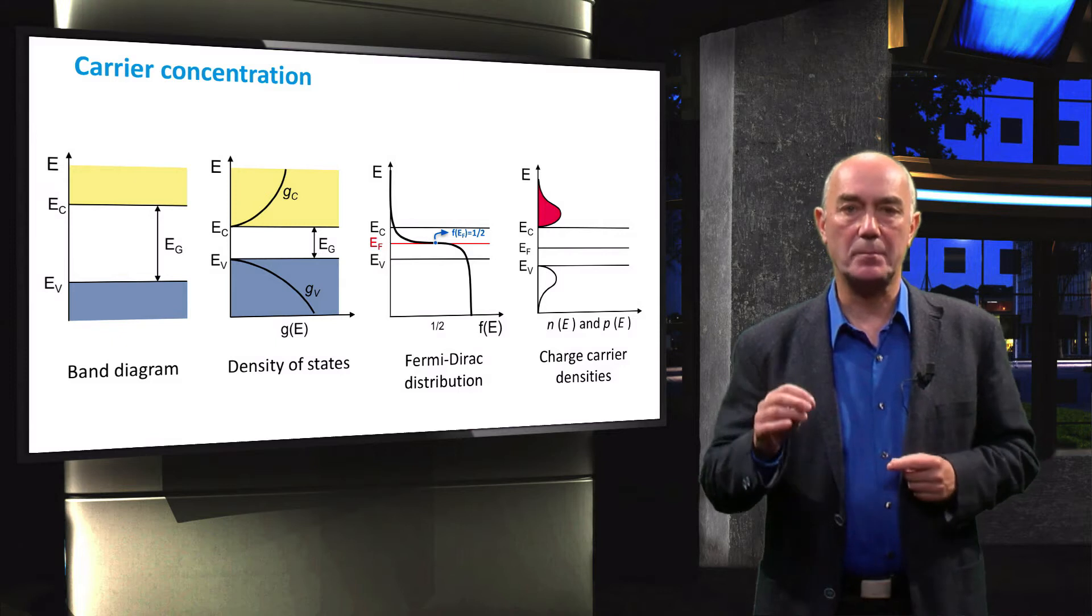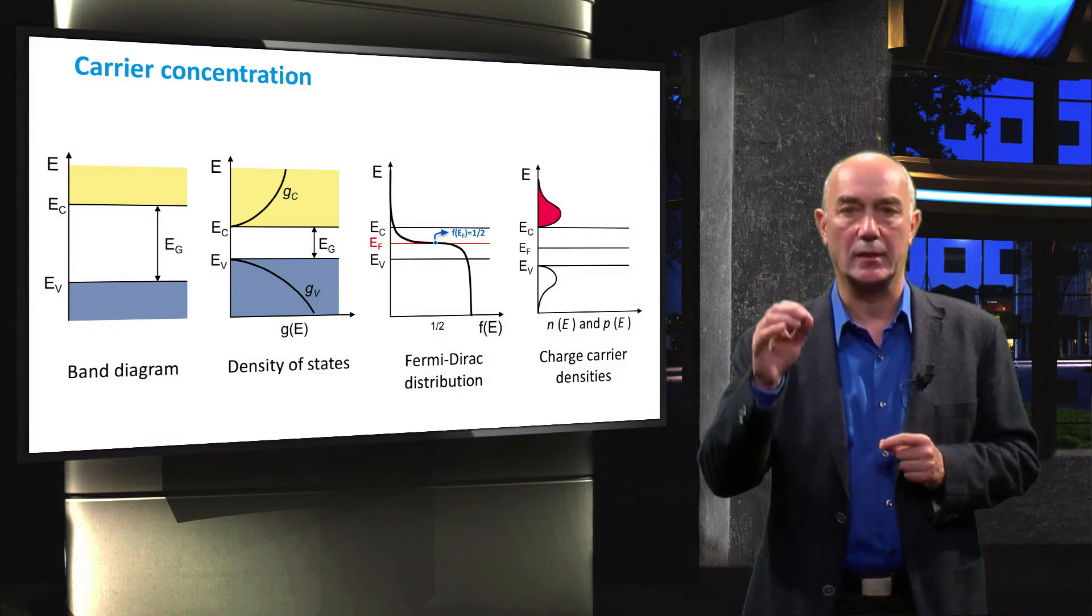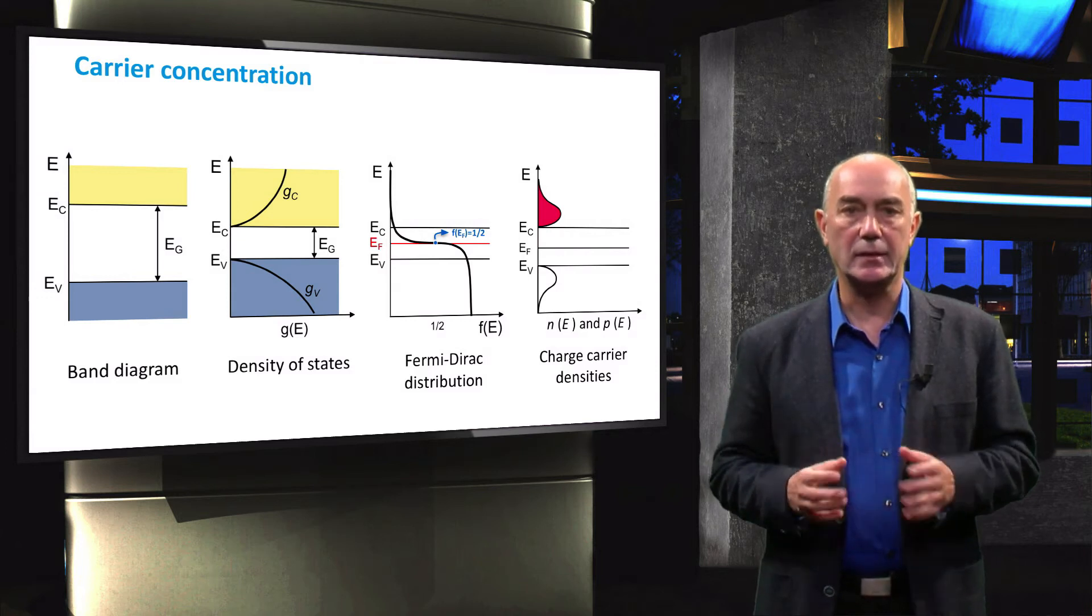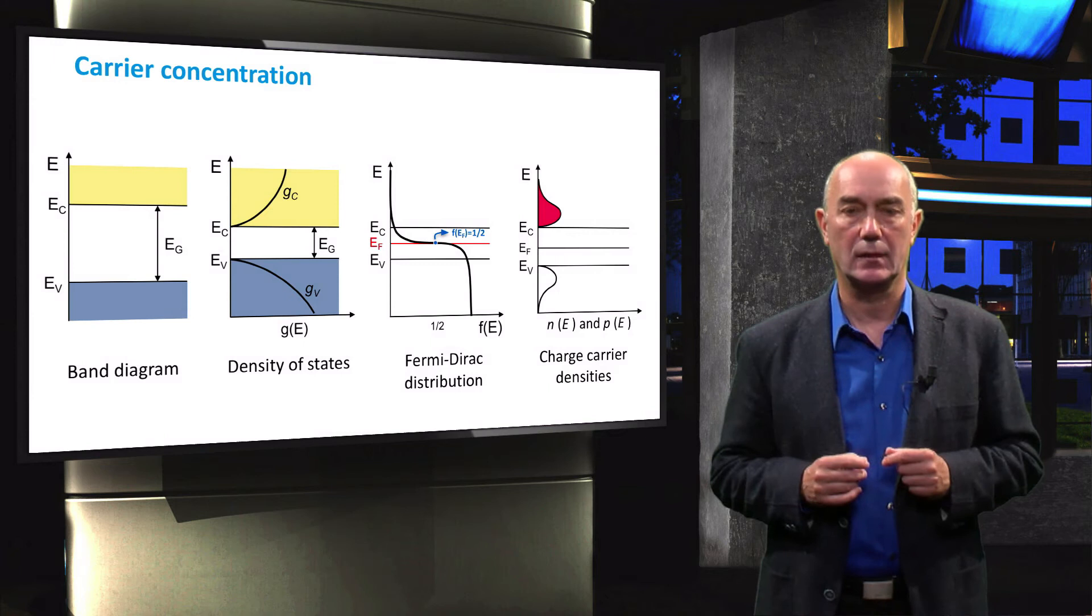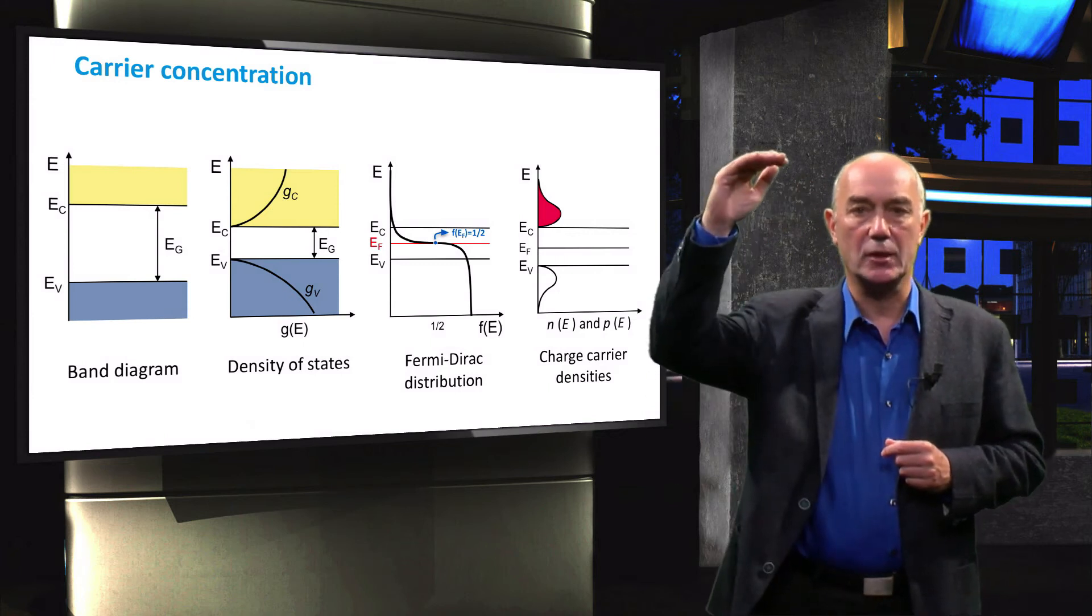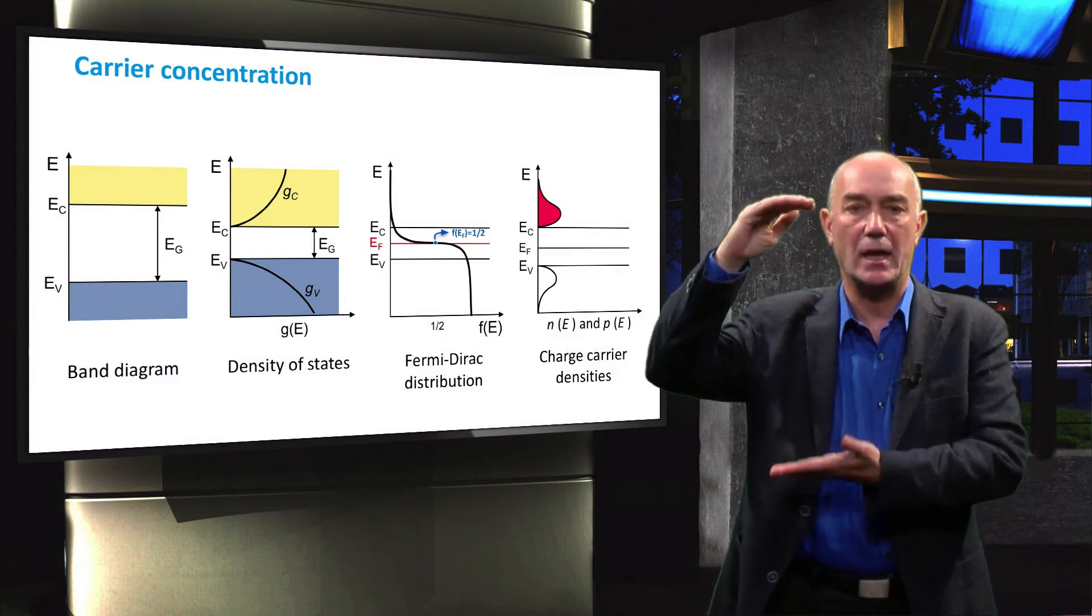Now the last step is to determine the charge carrier densities in conduction and valence bands. This is what the profile of the occupied states looks like. On the top, we can see the occupation of the conduction band states, and on the bottom, we see the occupation of the valence band states.